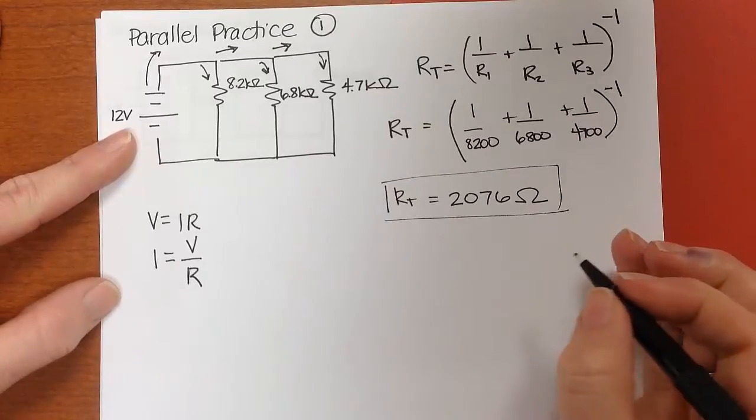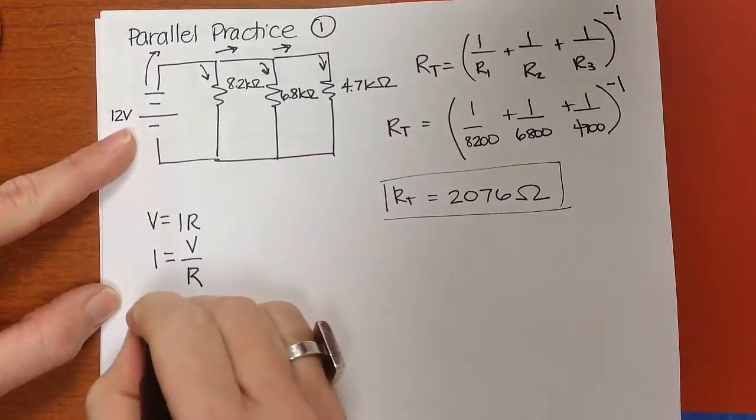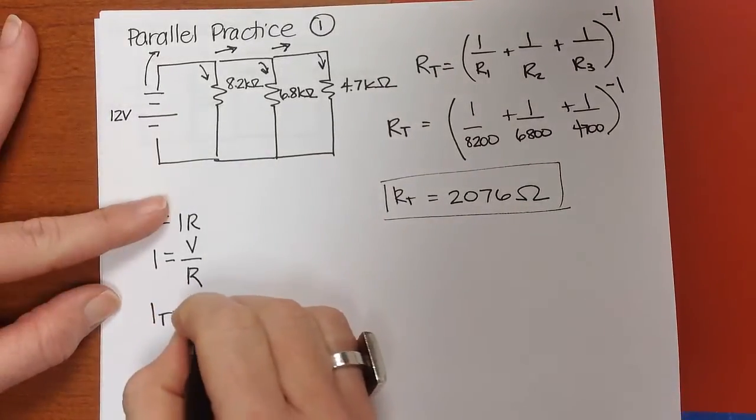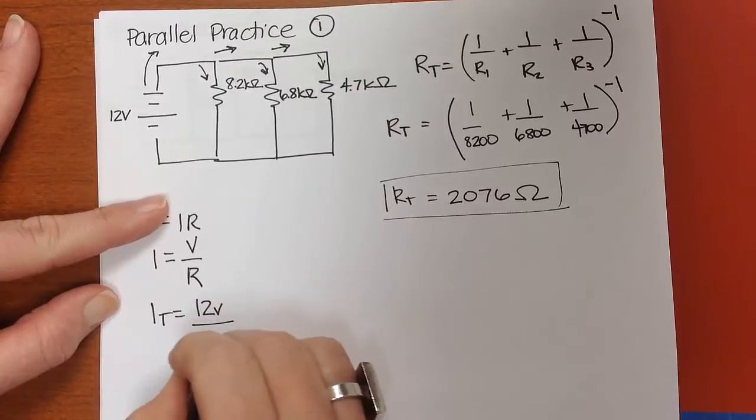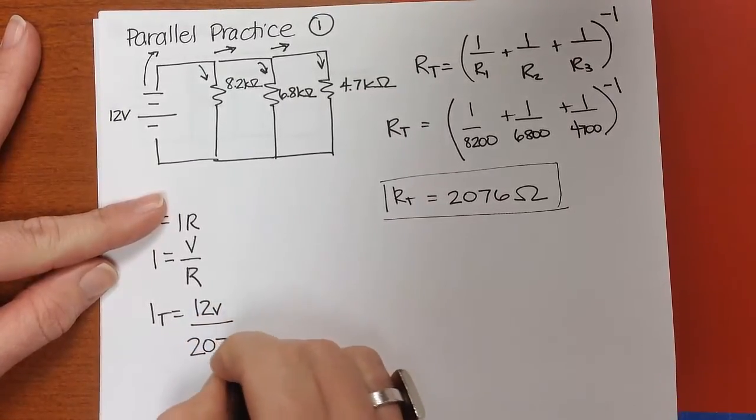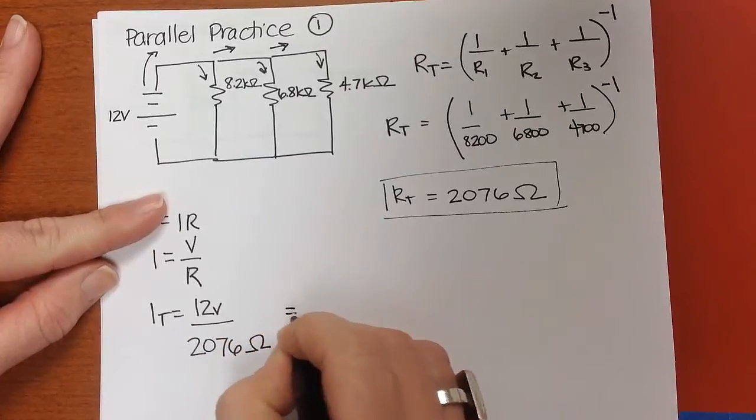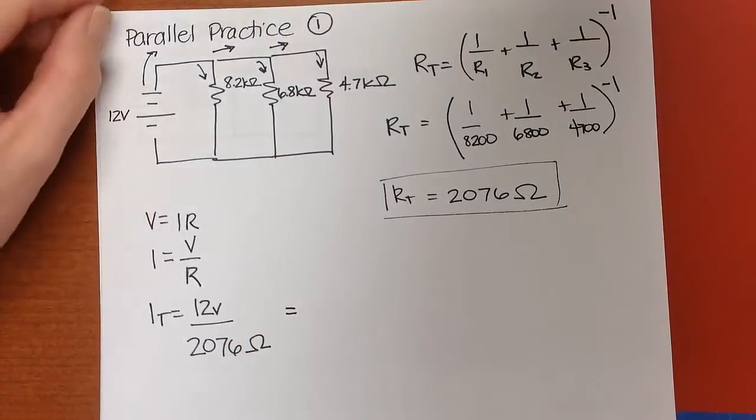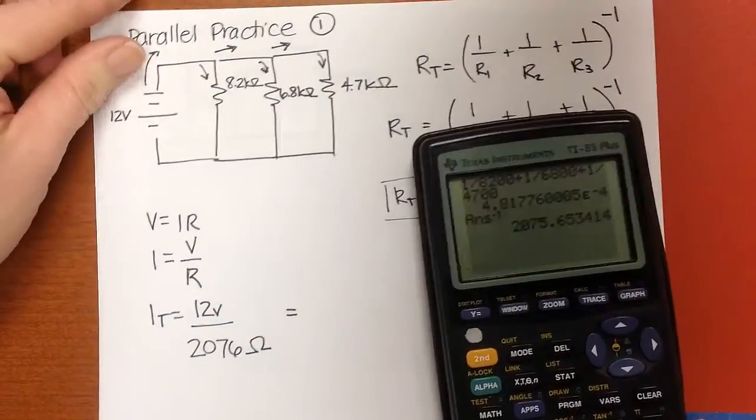So the total current is going to be equal to 12 volts divided by the total resistance. And now we'll solve. So back to our calculator.